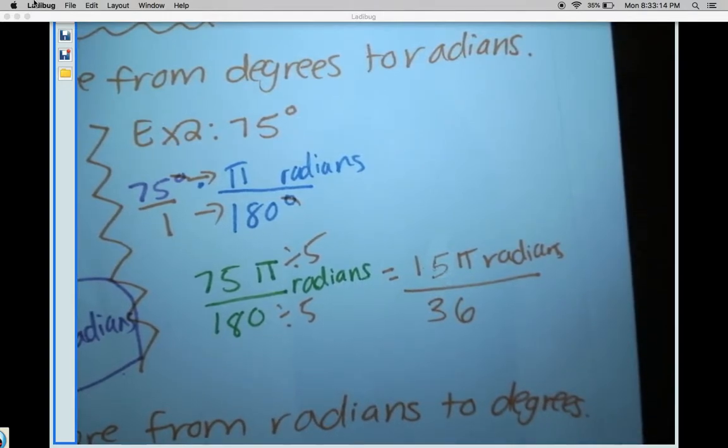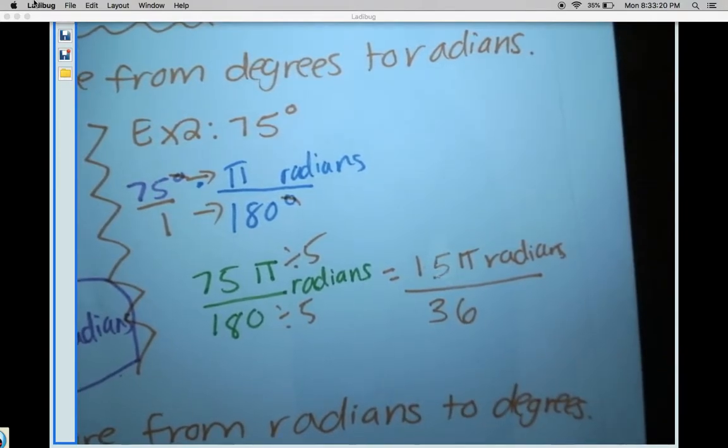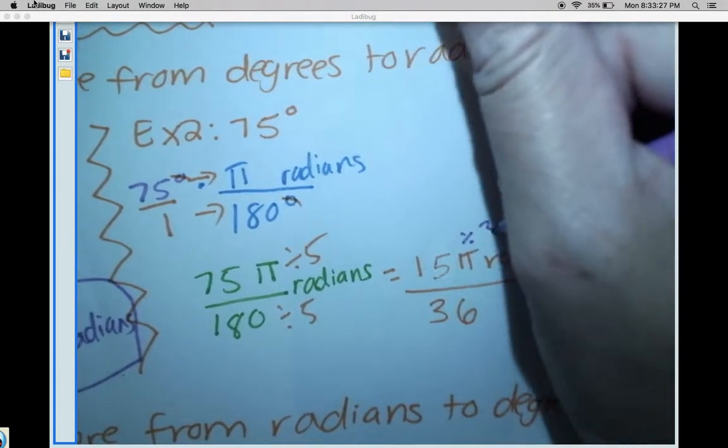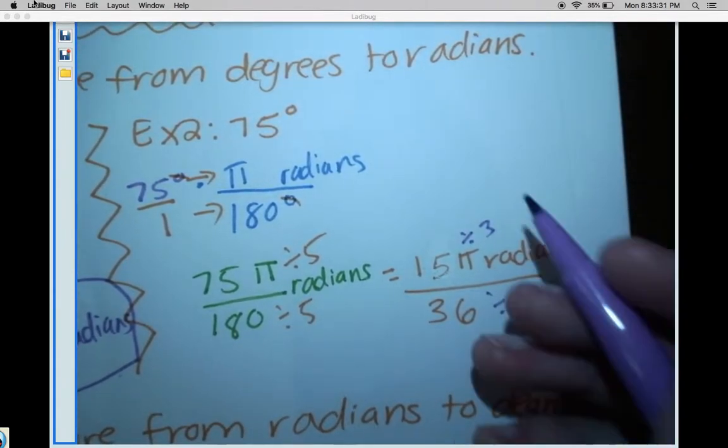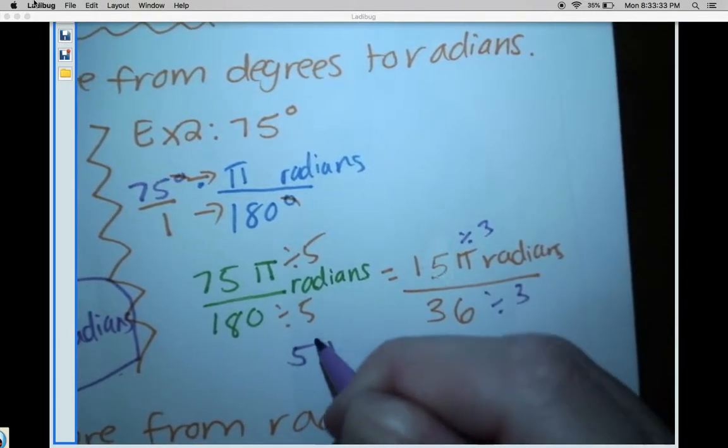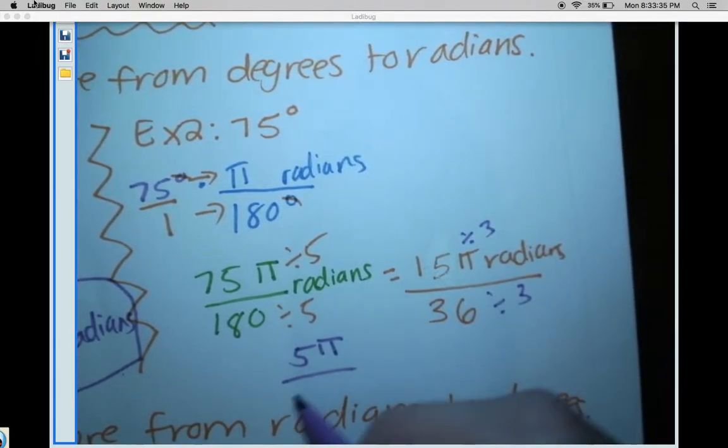Actually, I can divide both of those by an even larger number. I can divide both of these by 3. I could have used 15 from the start, but that's okay, we can keep reducing down. So I'm gonna divide both of these by 3 again. 15π divided by 3 will be 5π over 36 divided by 3 will be 12.